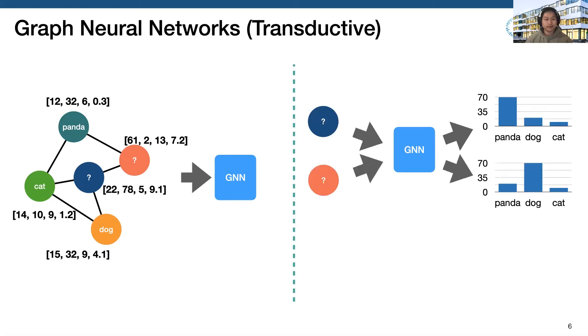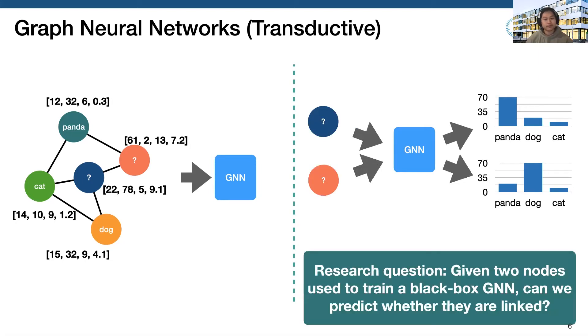In our work, our research question is: given two nodes used to train a black box GNN, can we predict whether they're linked or not?